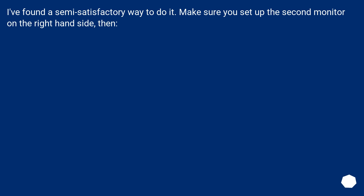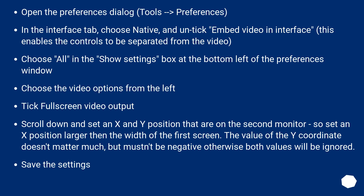I've found a semi-satisfactory way to do it. Make sure you set up the second monitor on the right-hand side. Open the Preferences dialog via Tools > Preferences, in the Interface tab. Choose Native and untick Embed Video in Interface. This enables the controls to be separated from the video.